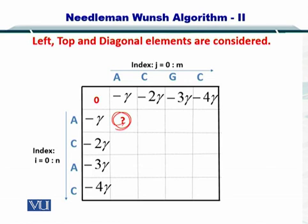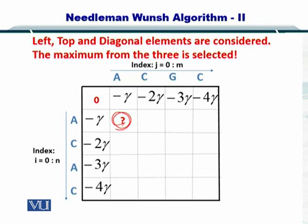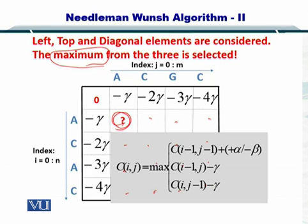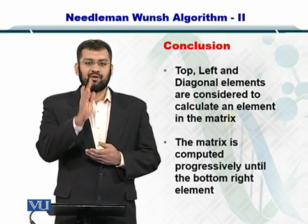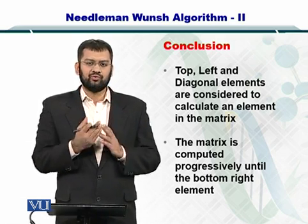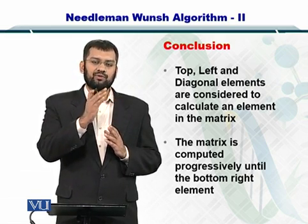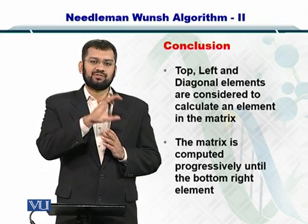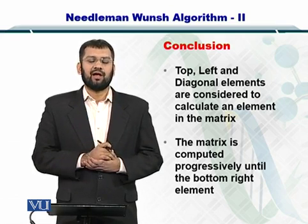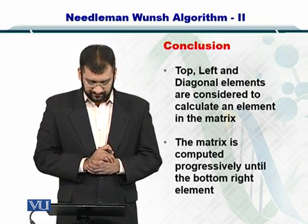So in this way, you can complete the matrix by looking at the maximum element by element like that. The only thing to remember is that you need to consider each one of these conditions. So in conclusion, the top, the left and the diagonal positions are used to compute the current position. And once you compute them, then the maximum of each one of these is placed in the element that you are trying to compute. And the matrix is computed progressively and you fill each position one by one until all the positions are filled up.